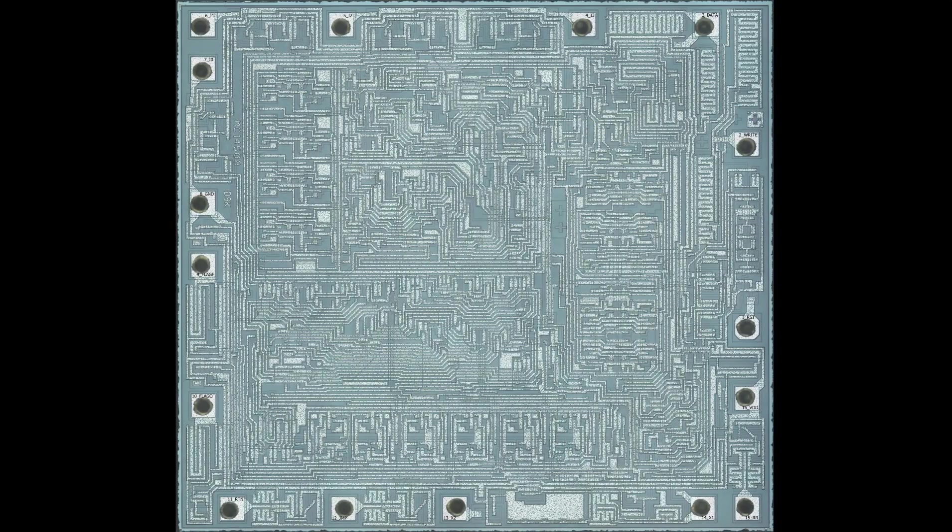But here's where things get really interesting. They also included a gentleman by the name of John McMaster. And he is the gentleman who decapped the chip for us. He essentially uses a chemical to strip away the plastic of the chip, exposing the silicon die. And then he can take a picture of it. And sure enough, after a couple of weeks, the first picture came in. And wow, what an unbelievable shot.